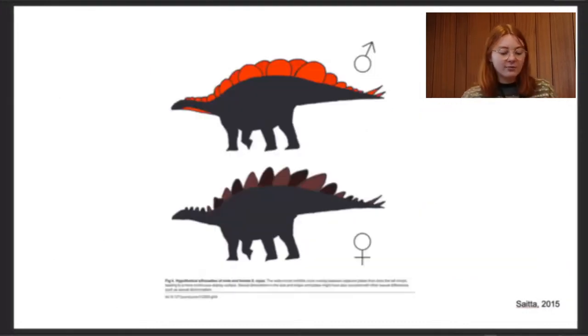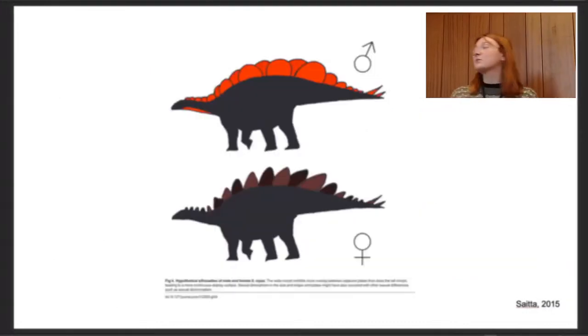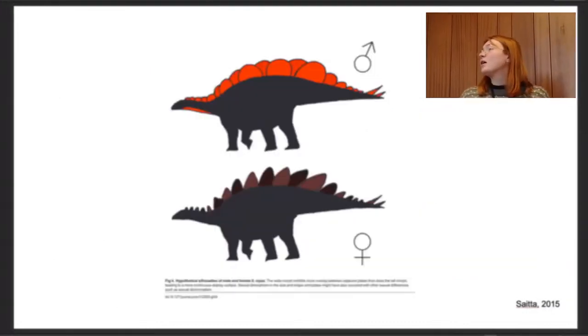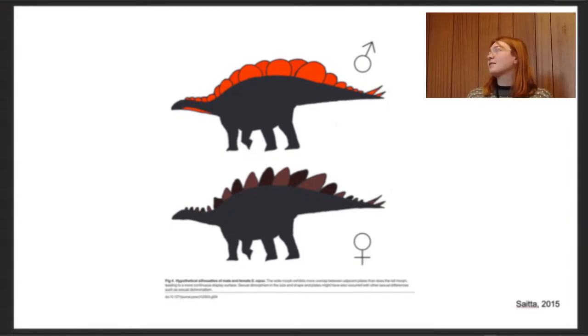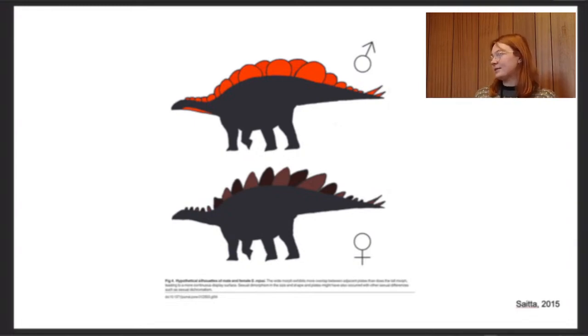Histological work ruled out ontogenetic variation — the animals were within the same age range, so differences weren't due to growth stages like in the pachycephalosaurs. The conclusion was that females had the more spiked plates and males had the more rounded plates.